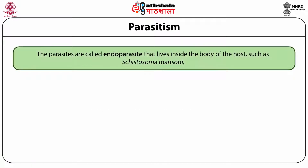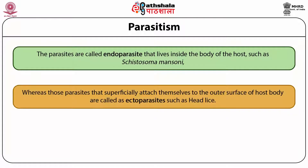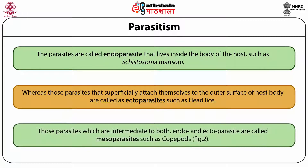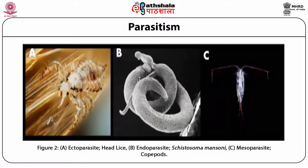Parasites that live inside the body of the host are called endoparasites, such as Cystosoma. Those parasites that superficially attach themselves to the outer surface of the host body are called ectoparasites, such as head lice. Those parasites which are intermediate to both endo- and ectoparasites are called mesoparasites, such as copepods. We can see these in figure 2.